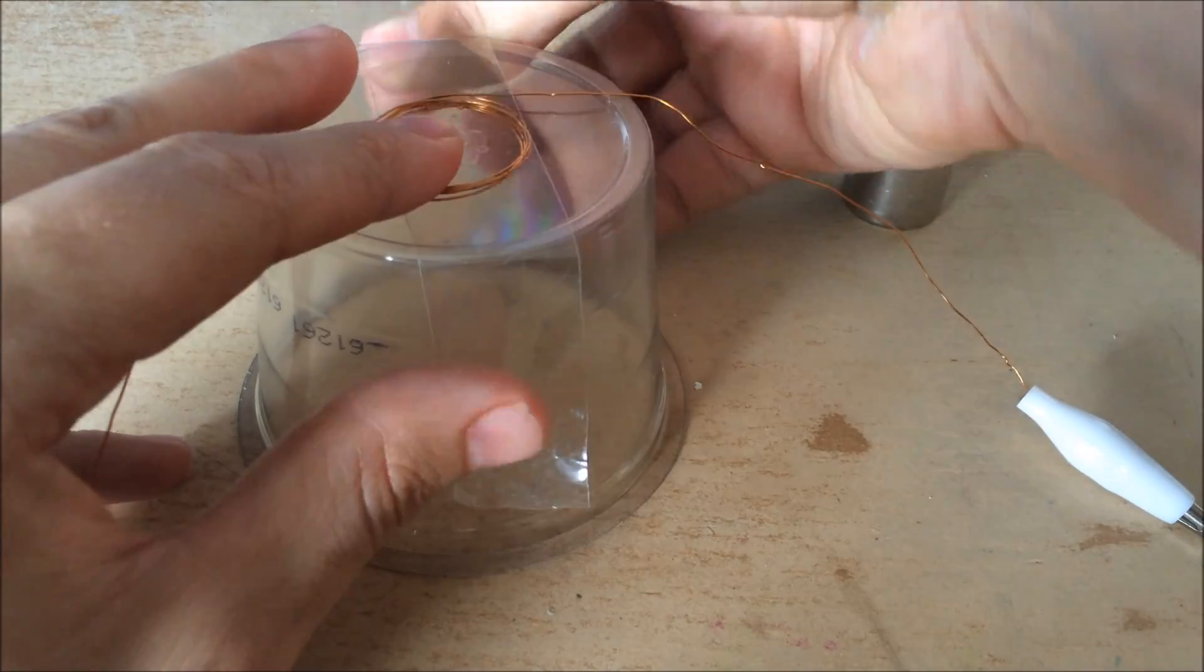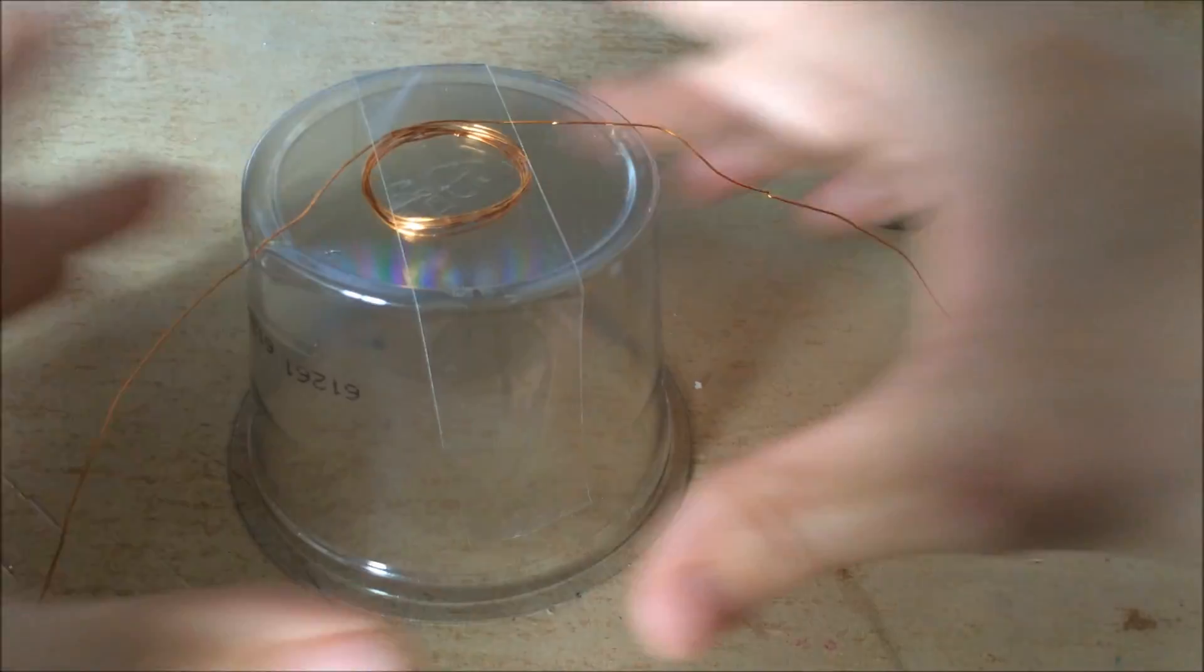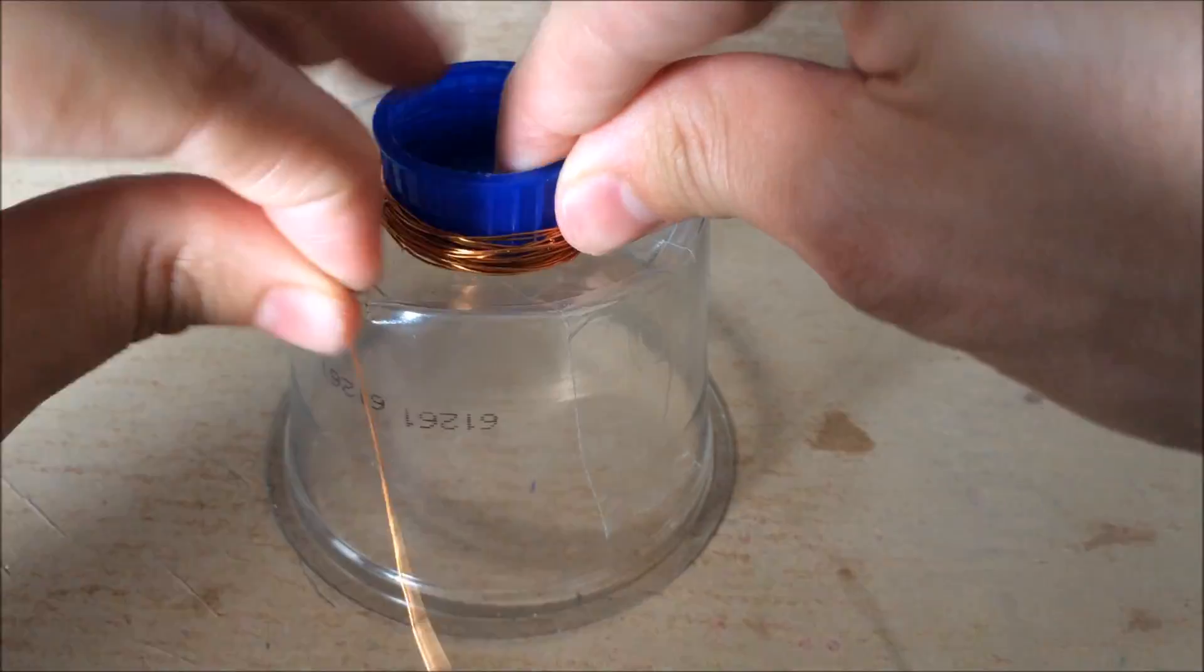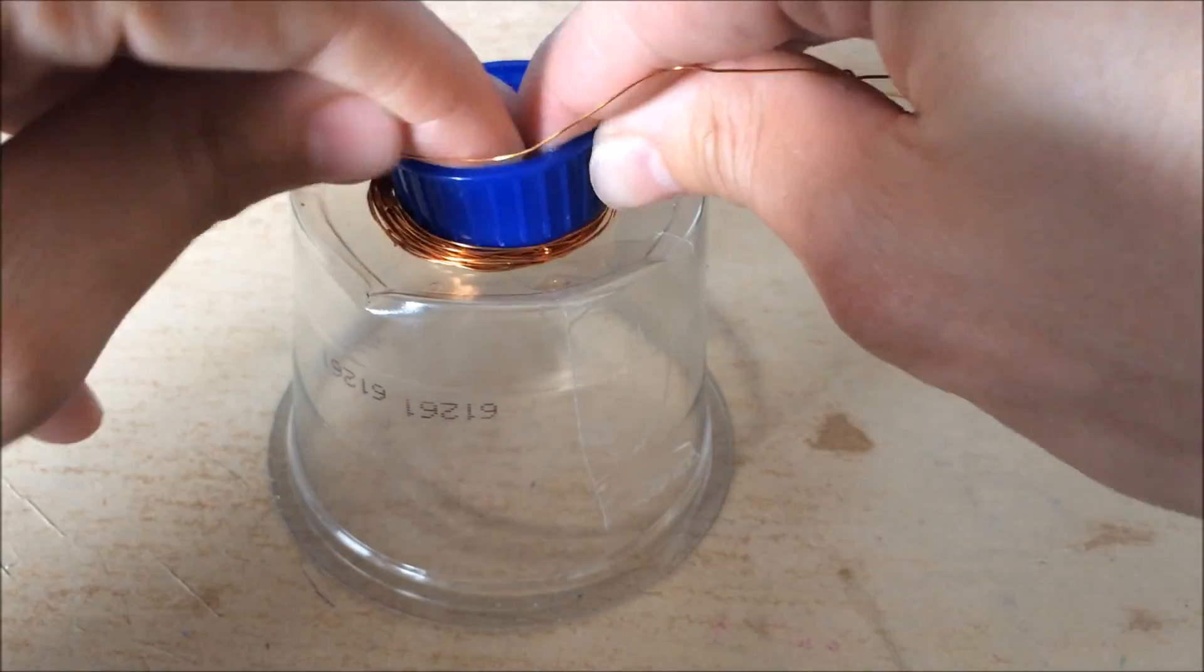Using the lid of a bottle, I used the same wire to make a bigger coil around the smaller one.